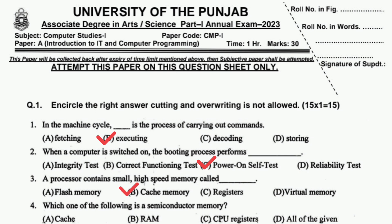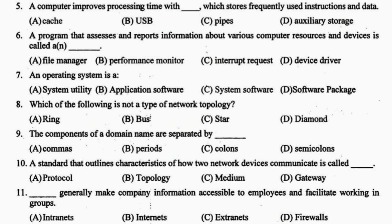One of the following is semiconductor memory — all of the given. A computer improves processing time with cache, which stores frequently used instructions and data. A program that assesses and reports information about various computer resources and devices is called a performance monitor.